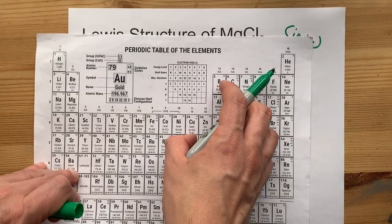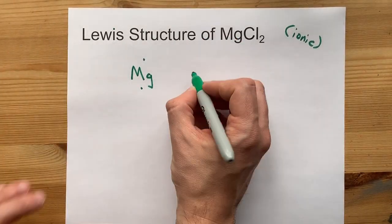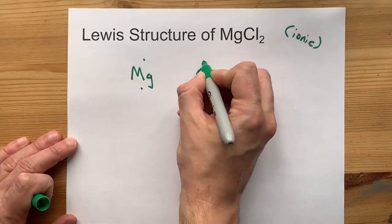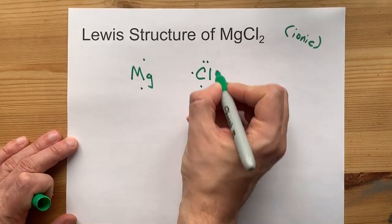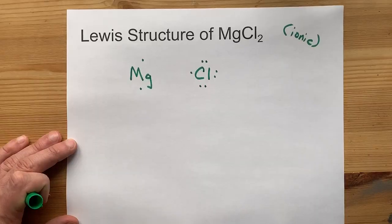Chlorine is in group 17. That means it brings 7 valence electrons with it. So I'm going to draw my Cl. 1, 2, 3, 4, 5, 6, 7 valence electrons.